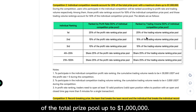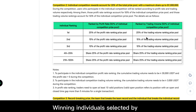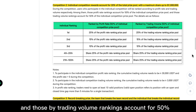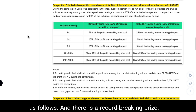Winning individuals selected by profit rate rankings account for 50% of the individual competition prize pool, and those by trading volume rankings account for the other 50%, as shown.